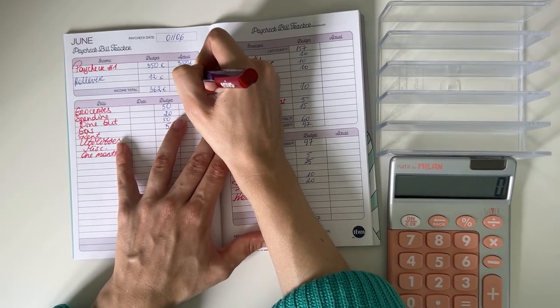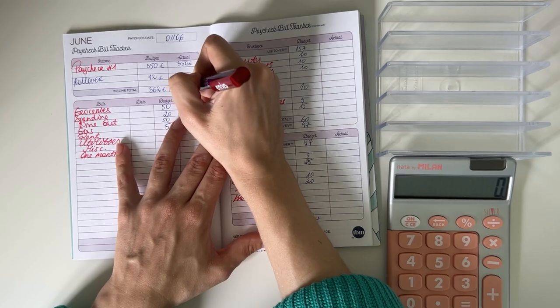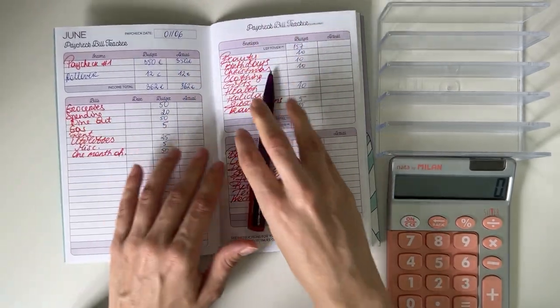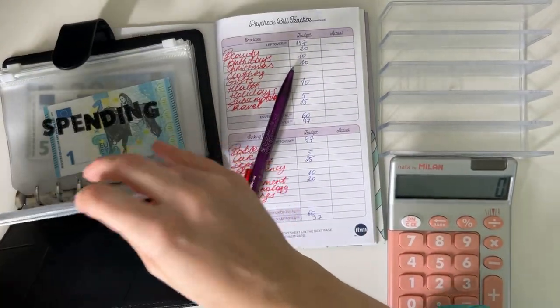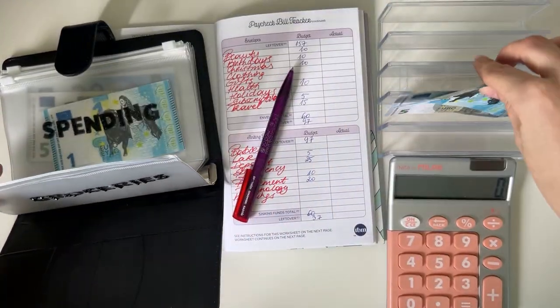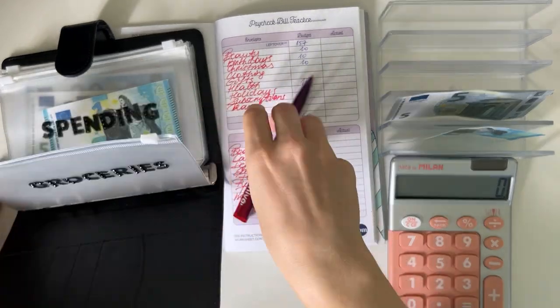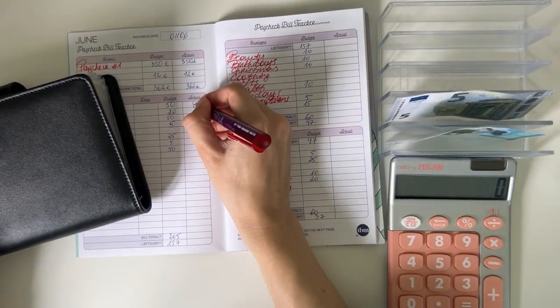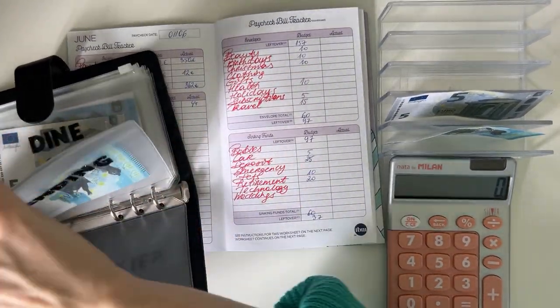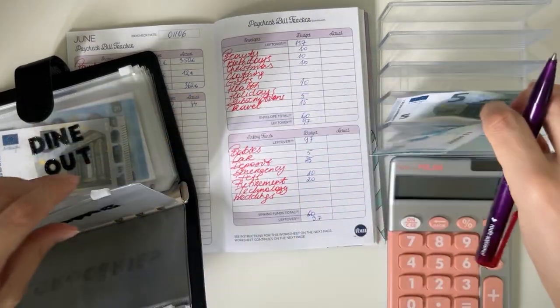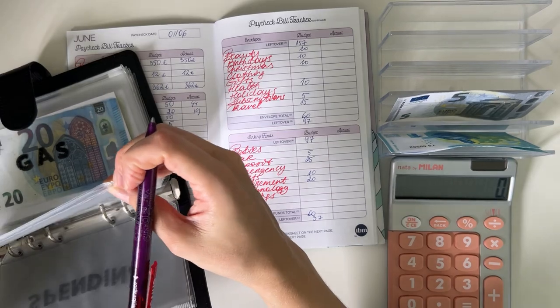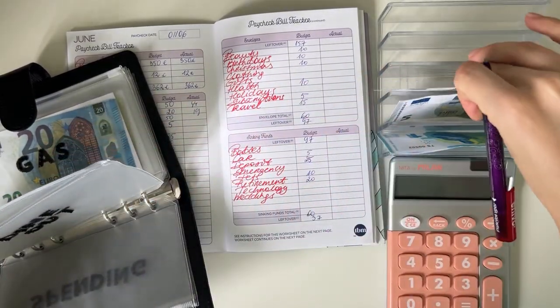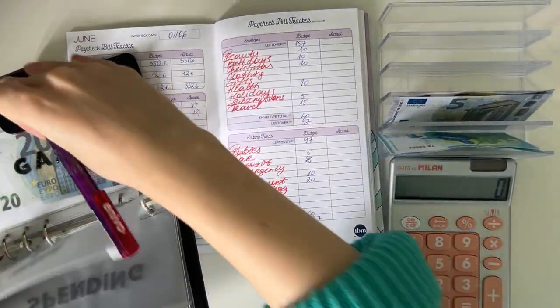Groceries we budgeted 50, we have a rollover of 5.06 so that means we spent 44. Spending we budgeted 20 and we have a rollover of 1, so that was 19. And dine out has a rollover of 5, we budgeted 50 so we spent 45 in there.